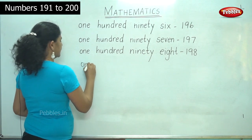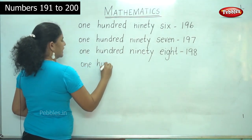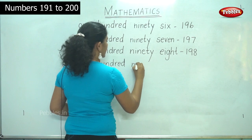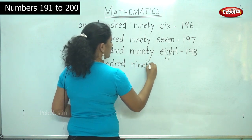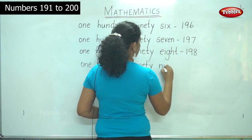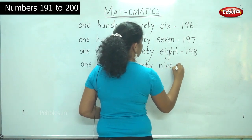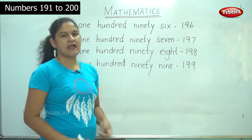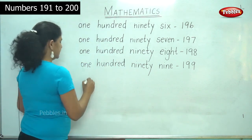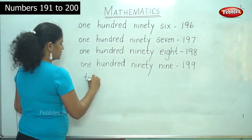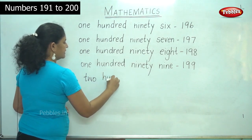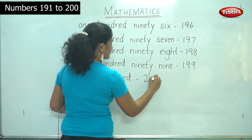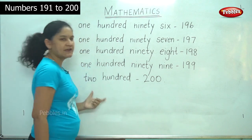199: O-N-E H-U-N-D-R-E-D N-I-N-E-T-Y N-I-N-E. 1-9-9, 199. And now we are moving on to the last number which is T-W-O H-U-N-D-R-E-D. 200. 2-0-0 is read as 200.